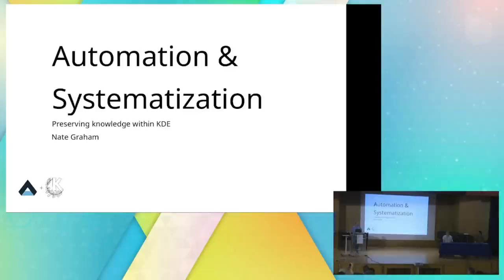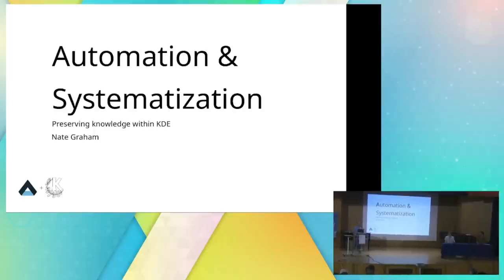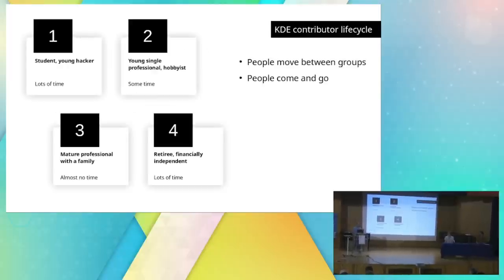Hello everybody, welcome to the panel. Today I'm going to talk about the automation and systematization goal. This is a goal that was chosen last year, so this is going to be a mid-cycle update. Let's get into it. First, let's start with a little bit of background about KDE and why the structure of KDE makes this goal important.